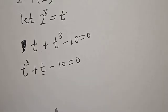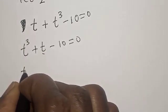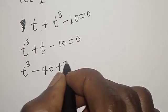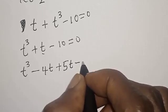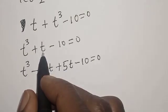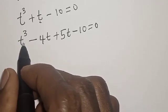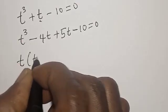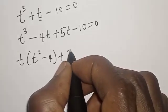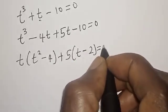We want to manipulate the t term such that the equation will not formally change. That is: t raised to power 3 minus 4t plus 5t minus 10 is equal to 0. Note that minus 4t plus 5t gives t. Let's factor t out from t cubed minus 4t: we have t times t squared minus 4, plus 5 times t minus 2, is equal to 0.